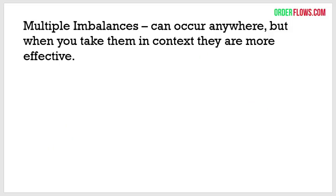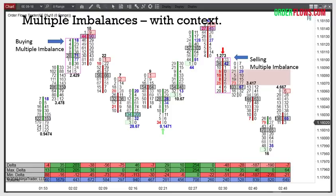Multiple imbalances can occur anywhere, but when you take them in context of what's happening in the market it's going to make them more effective. That's where a lot of traders go wrong — they don't take trades in context. Sometimes they say, well, I got a signal here, I've got to take it just because there's a signal there. When you take trades in context of the market — this is why I talk about being a trader — you have to understand what's happening. Things will become a lot easier for you.